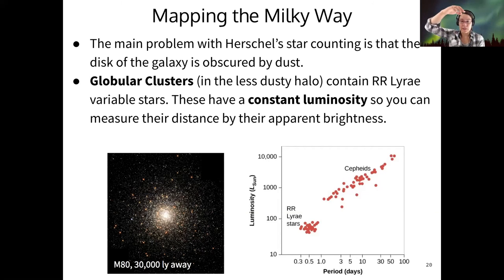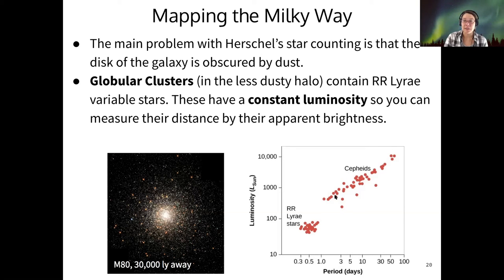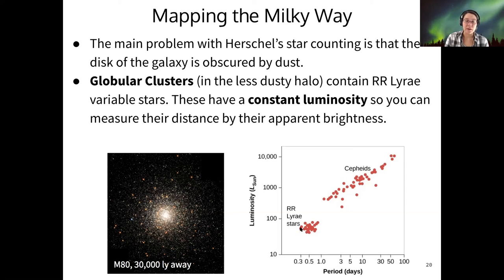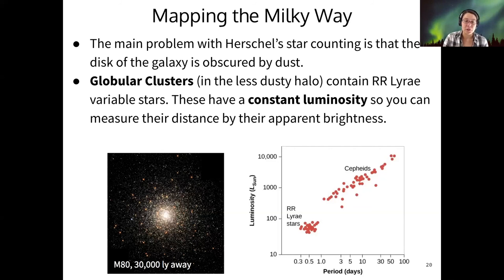So the next approach used to map the Milky Way was to use RR Lyrae stars — another type of variable star similar to Cepheids — which have a constant luminosity. If you measure their apparent brightness, and because they have a constant luminosity, you can measure their distance quite easily. Globular clusters not only contain Cepheid variable stars but also RR Lyrae stars, and they're out in the halo. Measuring the distance to all those globular clusters can give you the entire extent of our galaxy's halo.